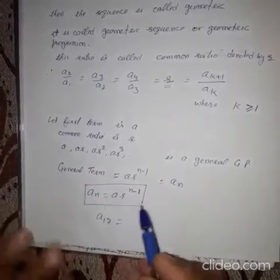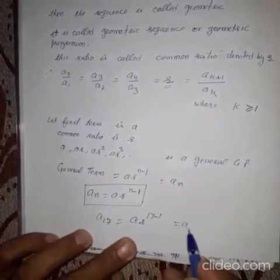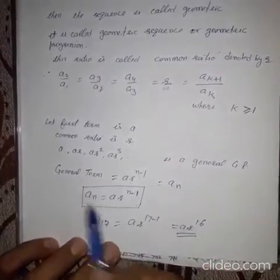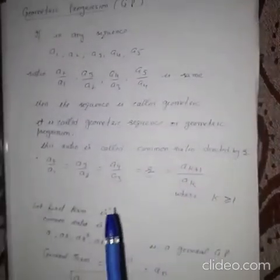So, you put values there. Value of N is 17. So, it will be A into R raised to the power 16. So, this is the method to calculate the terms. And that's all for today. Thank you.